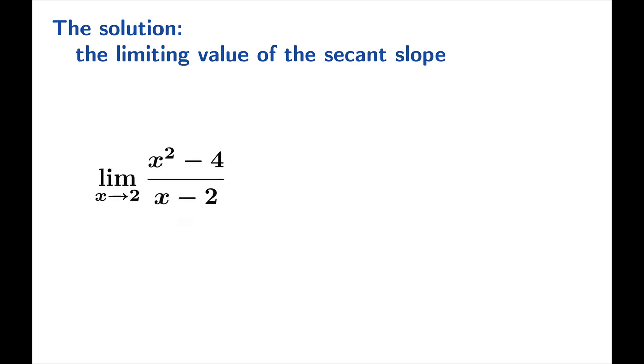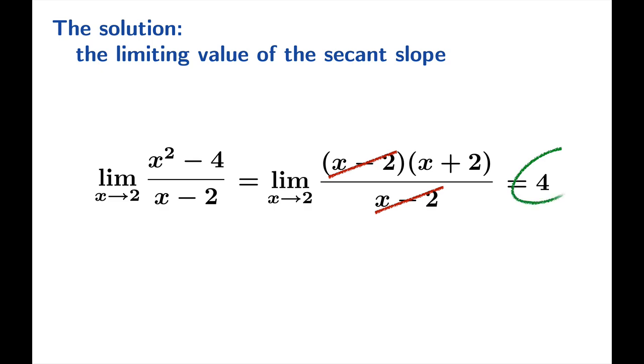This is an indeterminate form. The limit of both the numerator and the denominator is zero, so we're going to have to do some algebra. We can factor the numerator and these factors of x minus 2 cancel. And so this limiting value is 4, and there's our answer. Apparently the tangent slope is 4.